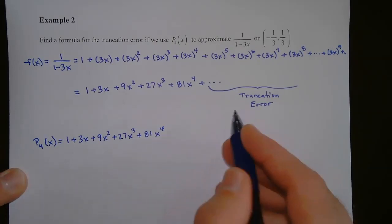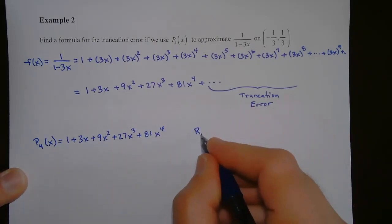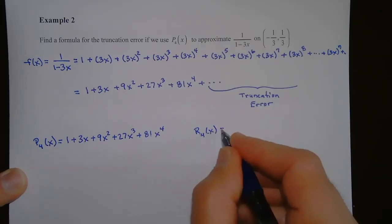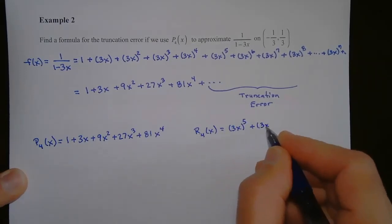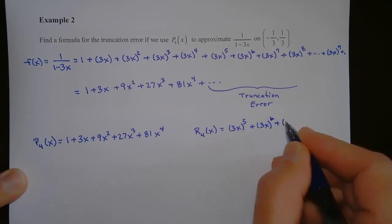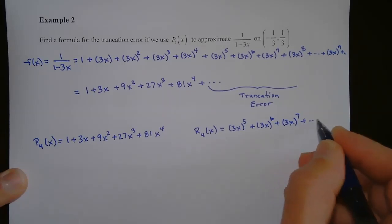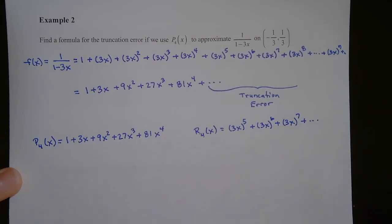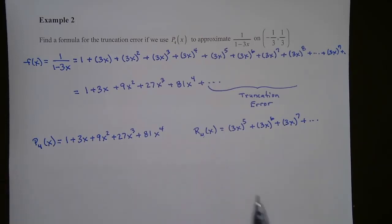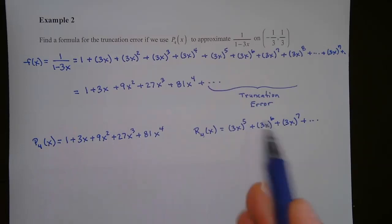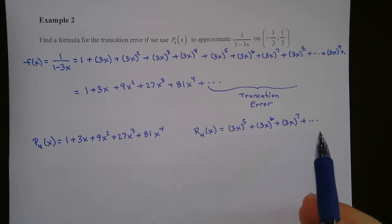Our truncation error, R₄(x), would equal (3x)⁵ plus (3x)⁶ plus (3x)⁷ plus dot dot dot — all the rest of them would be this error. How can we come up with a formula for this? What is a formula for this truncation error? Something you have to realize is this was a geometric series, so if we stop it at some point and take the rest of the terms, the rest of these is also a geometric series.